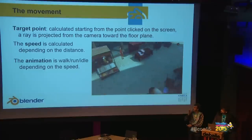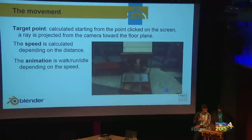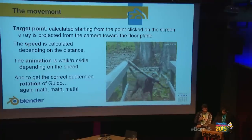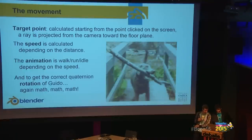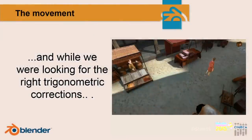Here you can see a little example. To get the correct quaternion rotation of Guido, we had to do a lot of math. While we were looking for the right trigonometric correction, we had some funny issues, like this Michael Jackson moonwalk — he was walking like that for a long time. You can imagine the right music here.